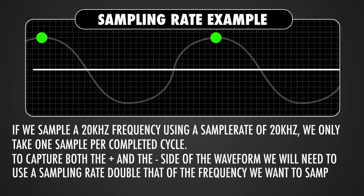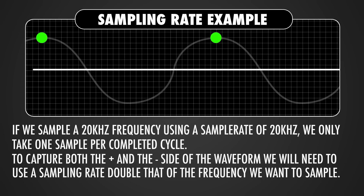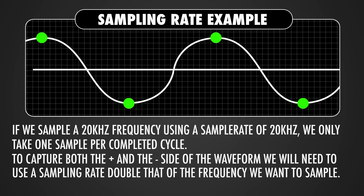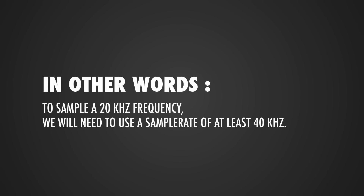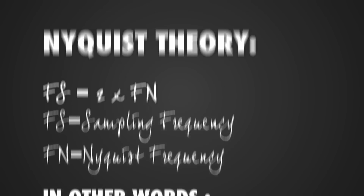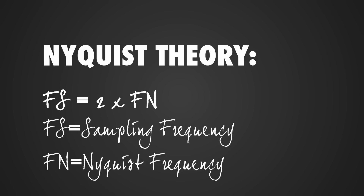If we sample a 20 kHz frequency with a sample rate of 20 kHz, we only have one sample per completed cycle. To capture the positive and negative side of the cycle, we need a sampling rate that is double the frequency we're sampling. In other words, to capture a 20 kHz frequency we need a sample rate of at least 40 kHz. This is the basics of the Nyquist theory by Harry Nyquist.